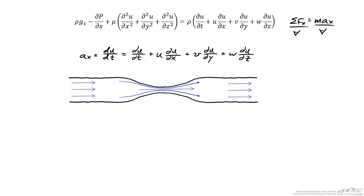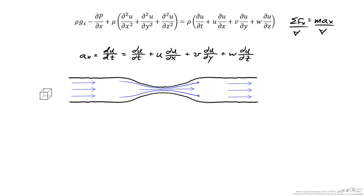To think about what this means physically, let's consider fluid flowing steadily from left to right through a two-dimensional constriction. Consider a differential element of fluid — infinitesimally small — placed at the inlet. As it flows through, it moves slowly in the wide region, then begins to accelerate through the constriction where the fluid moves very rapidly, and then slows down again recovering to a steady velocity at the exit. If flow is at steady state, the velocity at points one, two, and three shows no change over time.